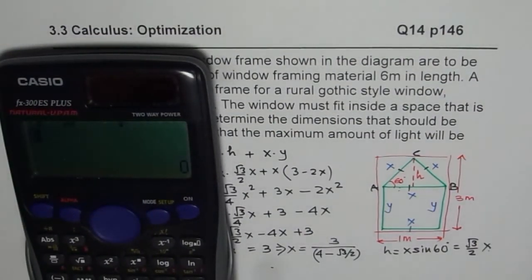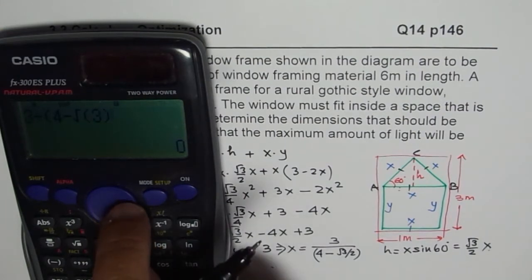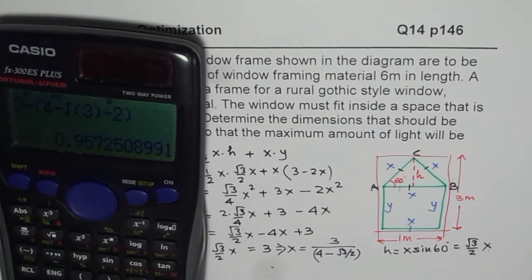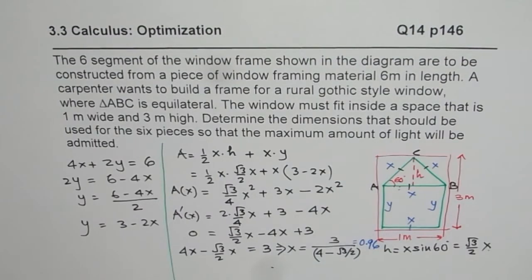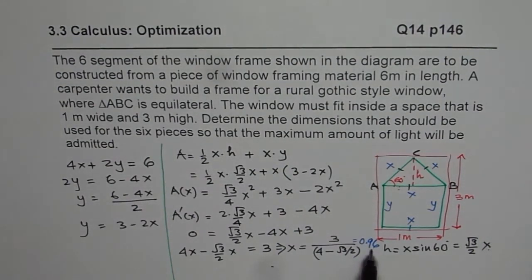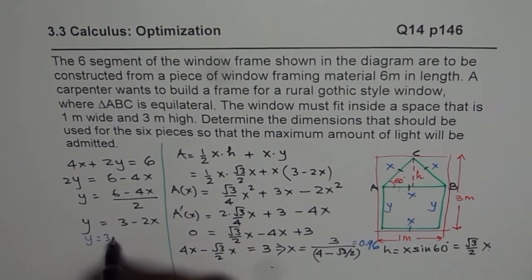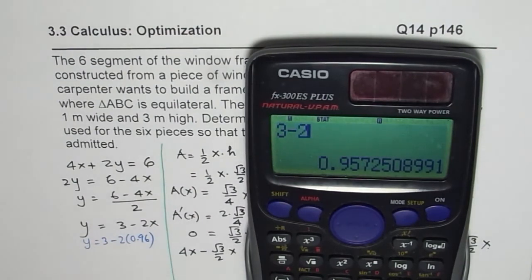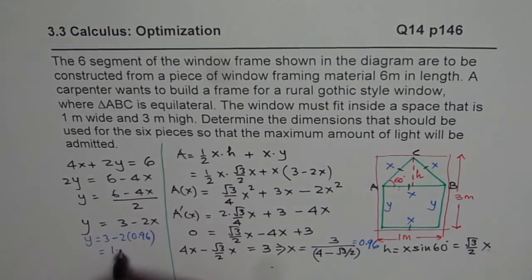So let's find this value. So we have to divide 3 divided by, within brackets, 4 minus square root 3, bracket close, divided by 2, bracket close, equals to 0.957. I am rounding it to 0.96. So we get x as equals to 0.96. x 0.96 does fit into 1, so that seems to be perfectly fine. So if x is 0.96, y will be equal to 3 minus 2 times 0.96. So we will do 3 minus 2 times 0.96 equals to 1.08. So y will be equals to 1.08.